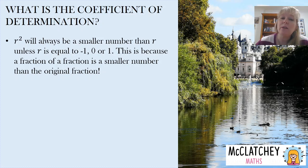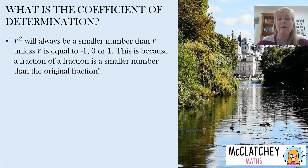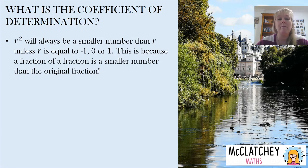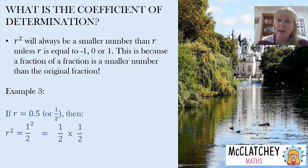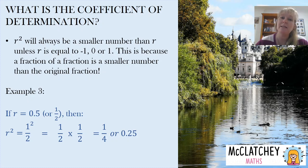If R was equal to negative 1, then R squared would be positive 1. If R was equal to 0, then R squared would also be 0. And if R was equal to 1, then R squared would also equal 1. Those are the only circumstances where R squared would be the same as R. For other numbers between negative 1 and positive 1 — for example R equals 0.5, which is a half — squaring it gives a quarter, or 0.25, which is smaller than a half. So the coefficient of determination will always be a smaller absolute value than the original correlation coefficient. If your correlation coefficient was 0.8 and you ended up with something bigger for R squared, you know you've done the wrong thing.